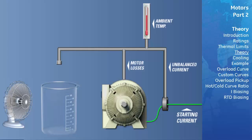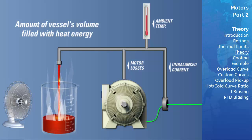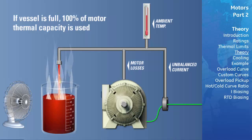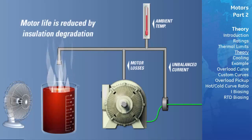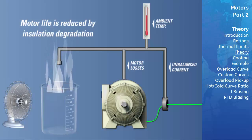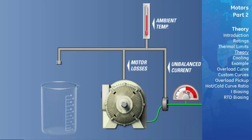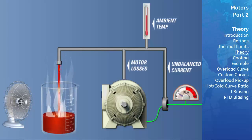The thermal capacity used is expressed as a percentage of the total thermal capacity of the motor — the amount of the vessel's volume filled with heat energy. If this imaginary vessel is full, 100% of the thermal capacity has been reached and any further increase will result in damage to the motor's insulation. The motor insulation does not immediately melt; rather, the rate of insulation degradation has reached a point where motor life will be significantly reduced. Ambient temperature and I-squared T heating start to fill the vessel when motor current is above the motor's full load current. Once motor current drops to or below full load current rating, the thermal capacity used starts to drop, as if the thermal energy is slowly evaporating from the vessel.